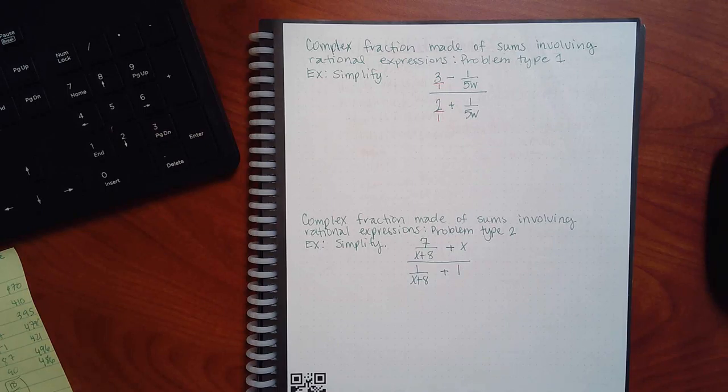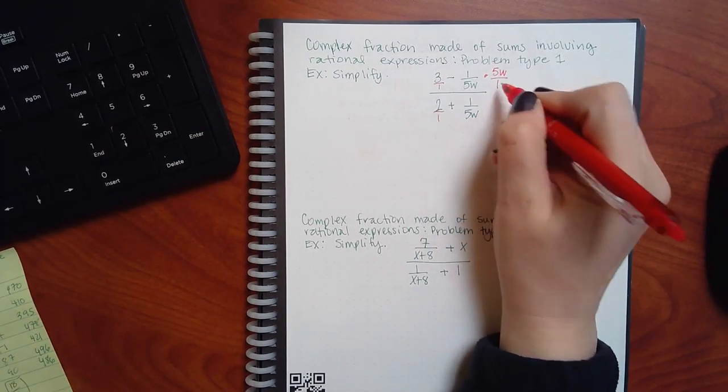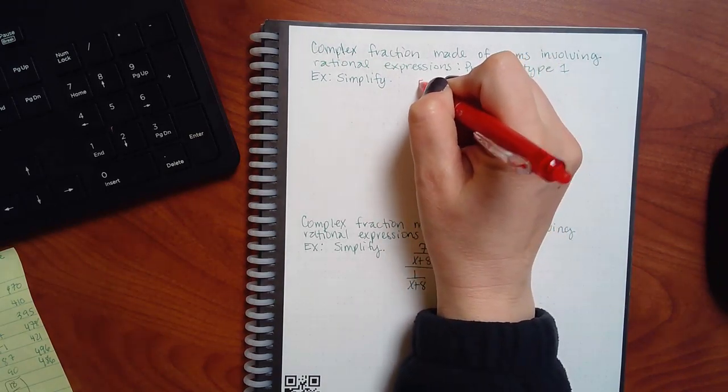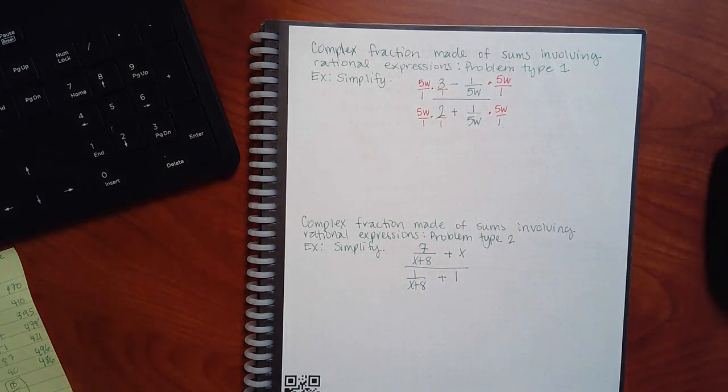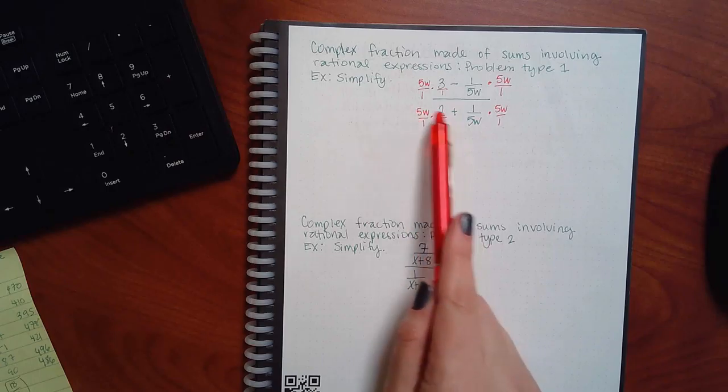So then what is the LCD here then? Of what? Of the whole thing. Of every single denominator you see. What is the common denominator? 5w. Yes, sir. 5w. So multiply 5w here, 5w over 1 here. But don't forget to do it to every term, right? All four terms have to get multiplied by that 5w over 1. Now, you only have 1s down here, so nothing is going to reduce.